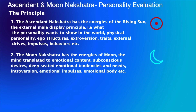So let's evaluate with case studies one by one, because we are talking about three kinds of ganas here: the Devgana, the Manushya gana, and the Rakshasa gana. We are talking about the ascendant and moon nakshatra placement in the birth chart, which gives us a number of combinations which we shall see one by one.